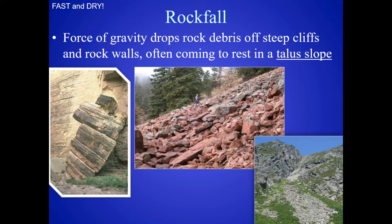Rock falls are fast and dry. This is when the force of gravity just drops rock debris off steep cliffs and rock walls, often coming to rest in a talus slope. A talus slope is what you find at the base of a mountain — a lot of gravel, large chunks, and boulders broken off the cliff face that aggregate together.